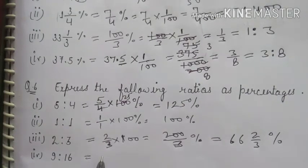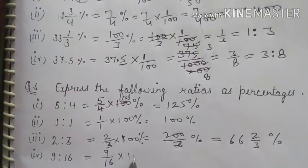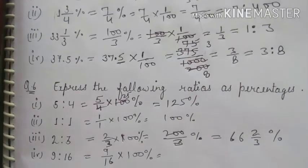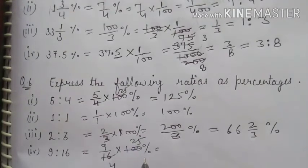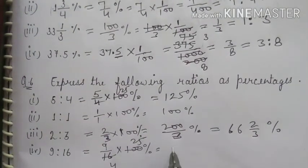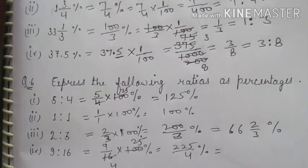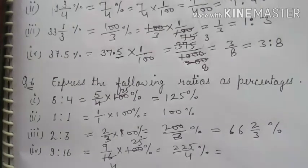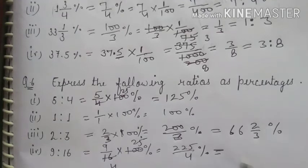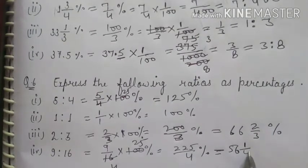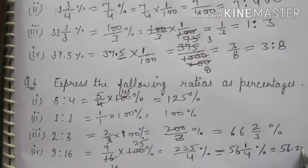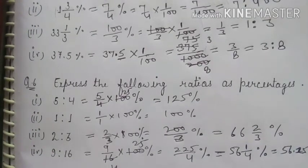Fourth, 9 upon 16: multiply by 100 percent — cancel 4 from 100 and 16, giving 25×9 = 225 upon 4 percent. This equals 56¼% or 56.25%. The answer can be expressed as a mixed fraction or decimal — both are acceptable.